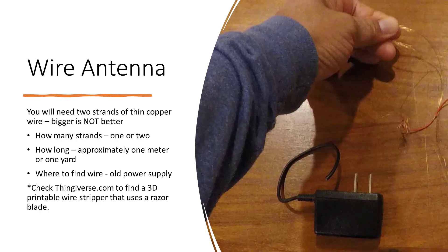The wire antenna. You're going to need two strands of thin copper wire. Bigger is not better - just two little strands. One or two, even. How long? Approximately one meter or one yard. I have old power supplies - get one from a neighbor or something. And you can check Thingiverse.com to find a 3D printable wire stripper if you don't want to take the time. Just use a razor blade and cut through the wires and trim them up.